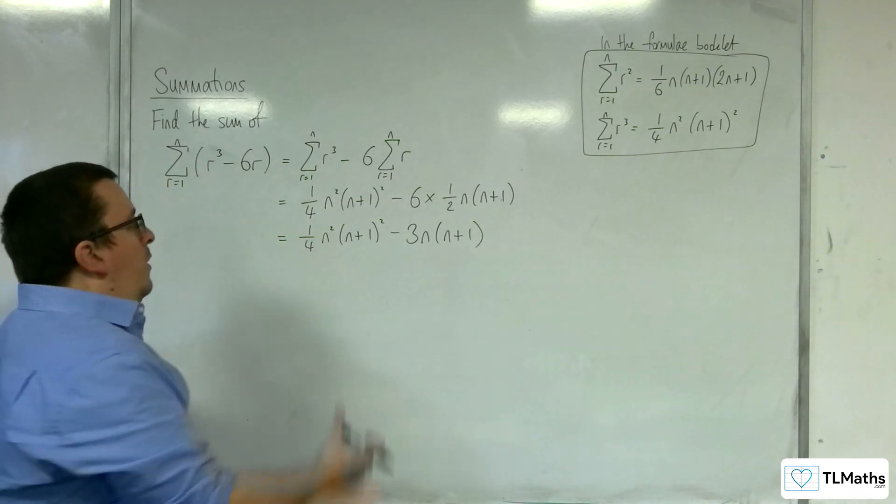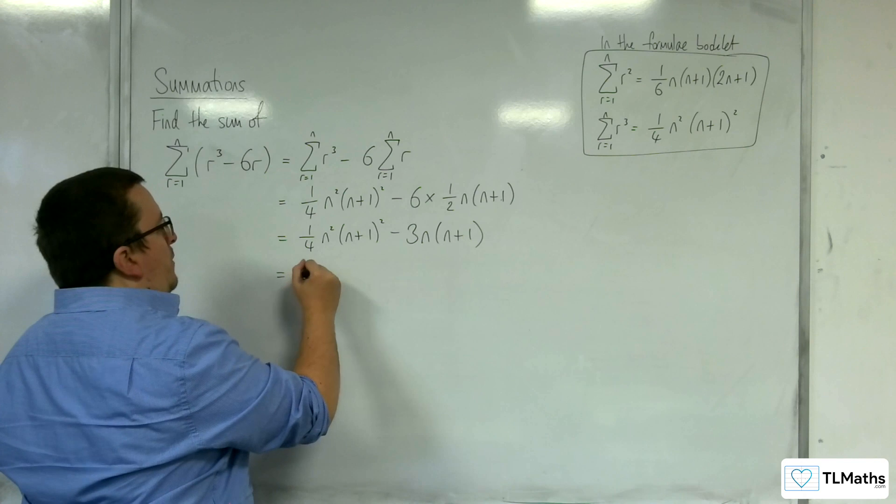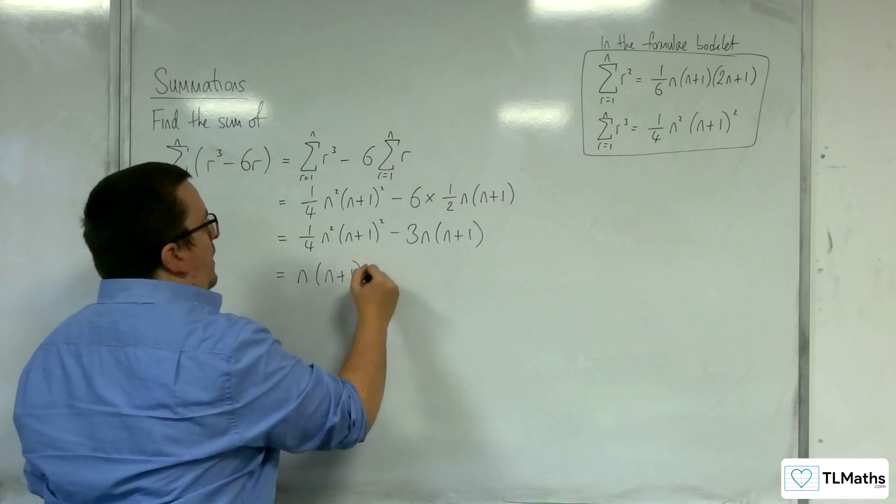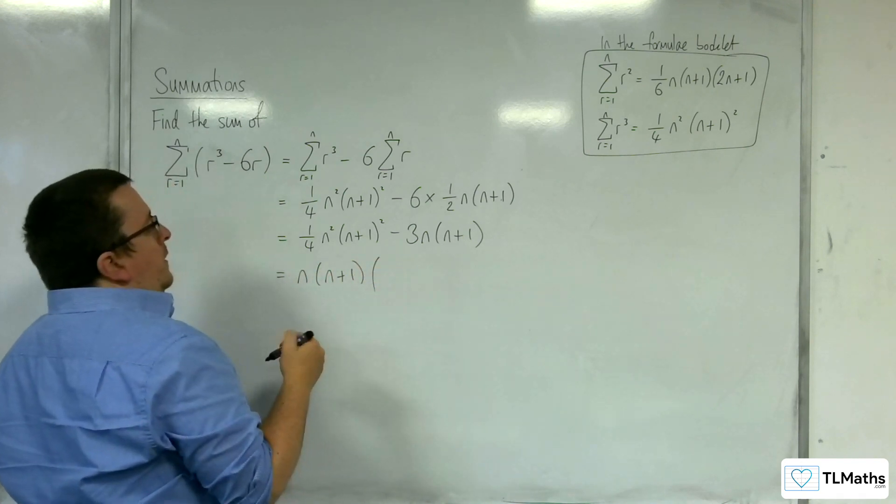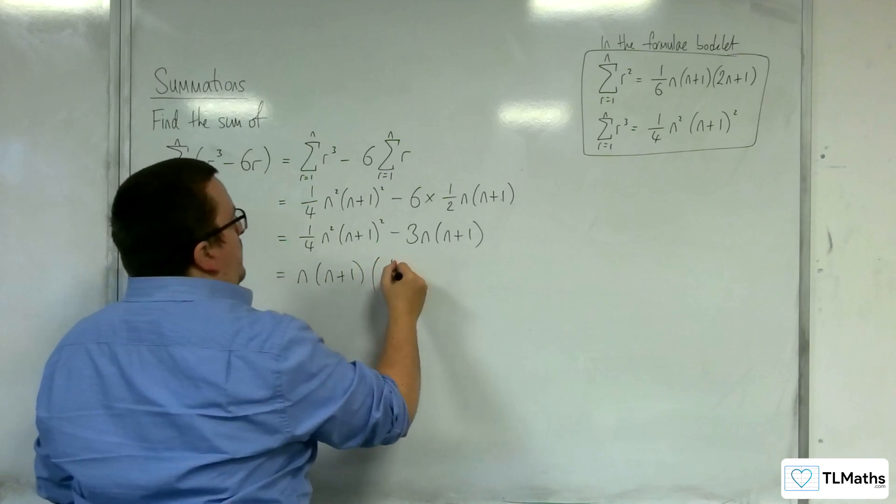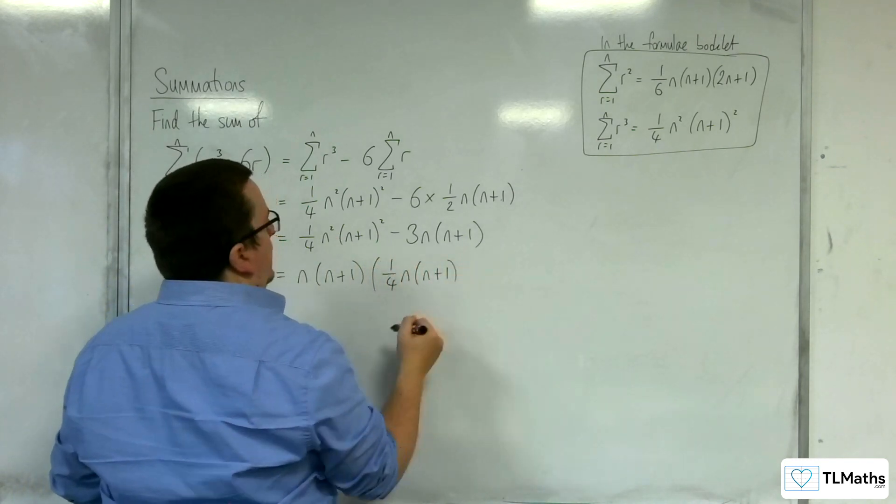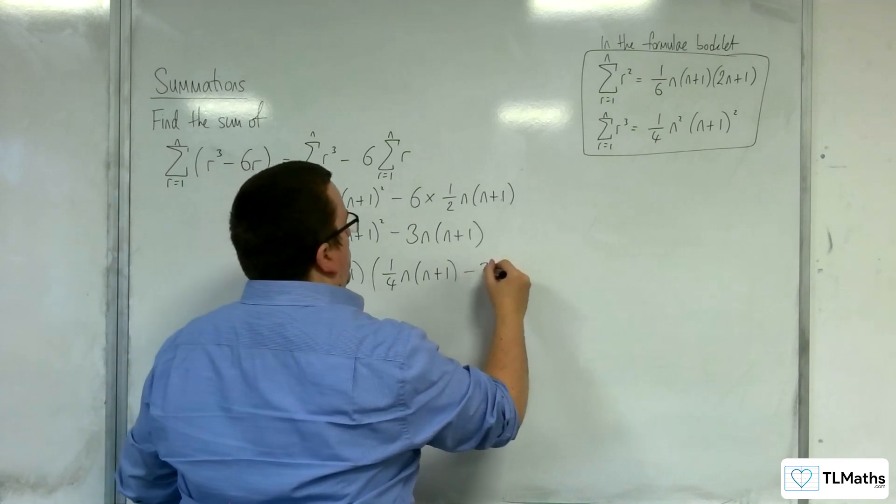So what can we factor out of both of these terms? Well, they both have the n n plus 1 in common. What would be left for this term would be 1 quarter n n plus 1, and for this term, take away 3.